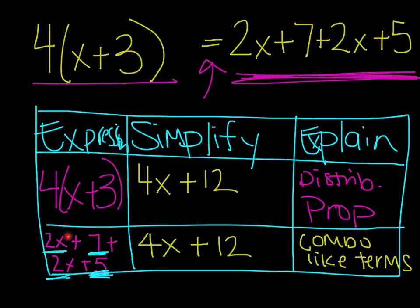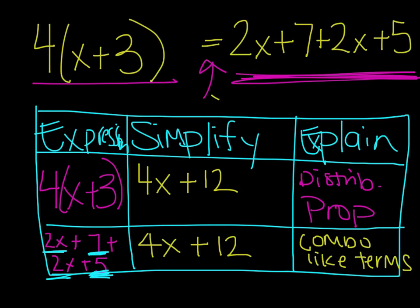In order to get from the second expression to the simplified form, all I did was combine like terms. In order to simplify the first, I used the distributive property. Since they both equal 4x plus 12, I know that 4 times the quantity x plus 3 and 2x plus 7 plus 2x plus 5 are equivalent expressions — yes, they are equivalent.